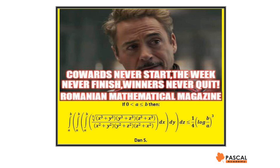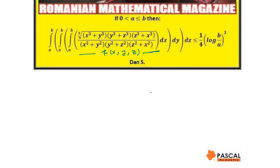In this video, we are going to prove that for any two positive real numbers a and b, when a is smaller or equal to b, the triple integral — integral from a to b, integral from a to b, integral from a to b — of f(x, y, z) dx dy dz, is smaller or equal to (1/4) · ln(b/a)³.